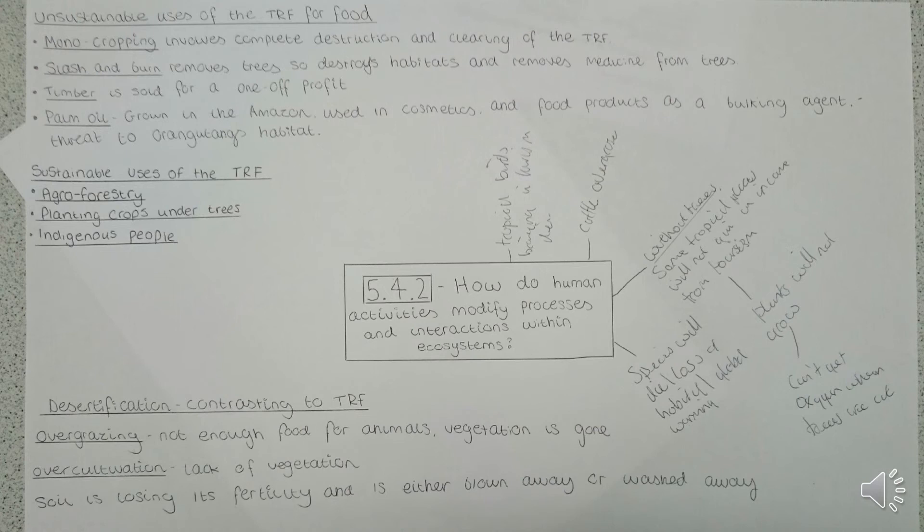If you remove elements of the tropical rainforest — particularly the timber — the flow of nutrients completely changes. You're taking carbon which could then be burnt, and that carbon is released into the environment.